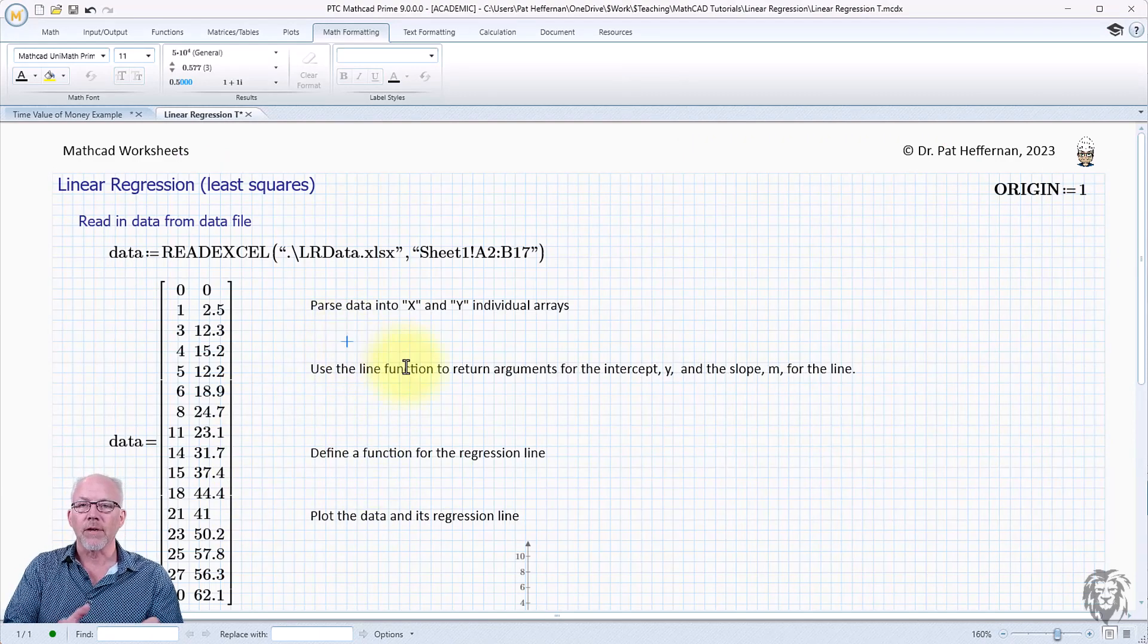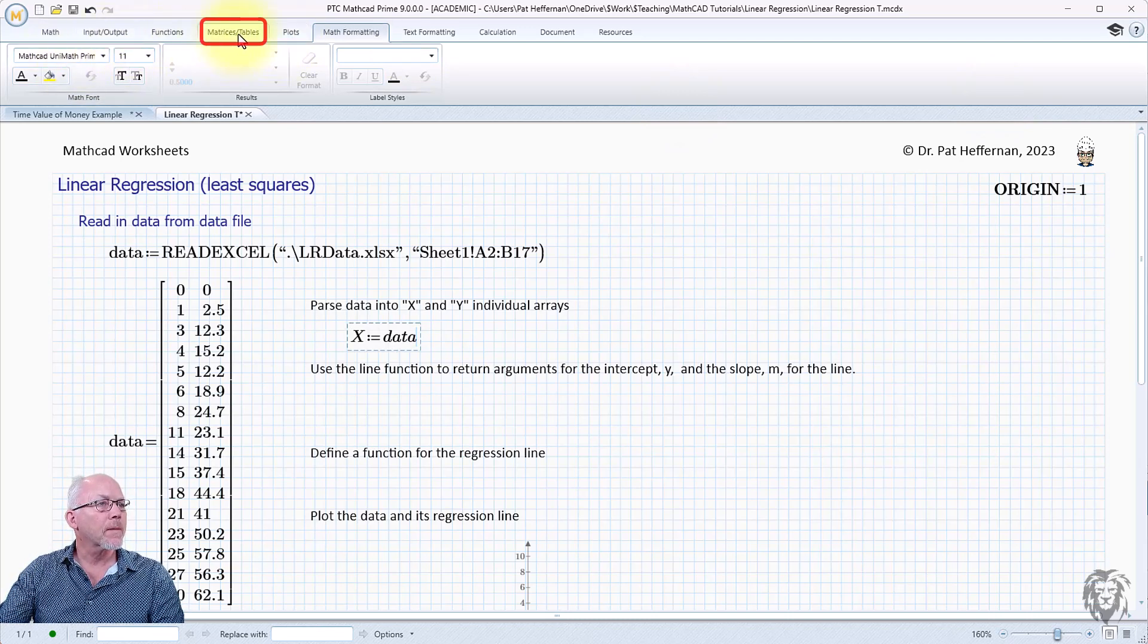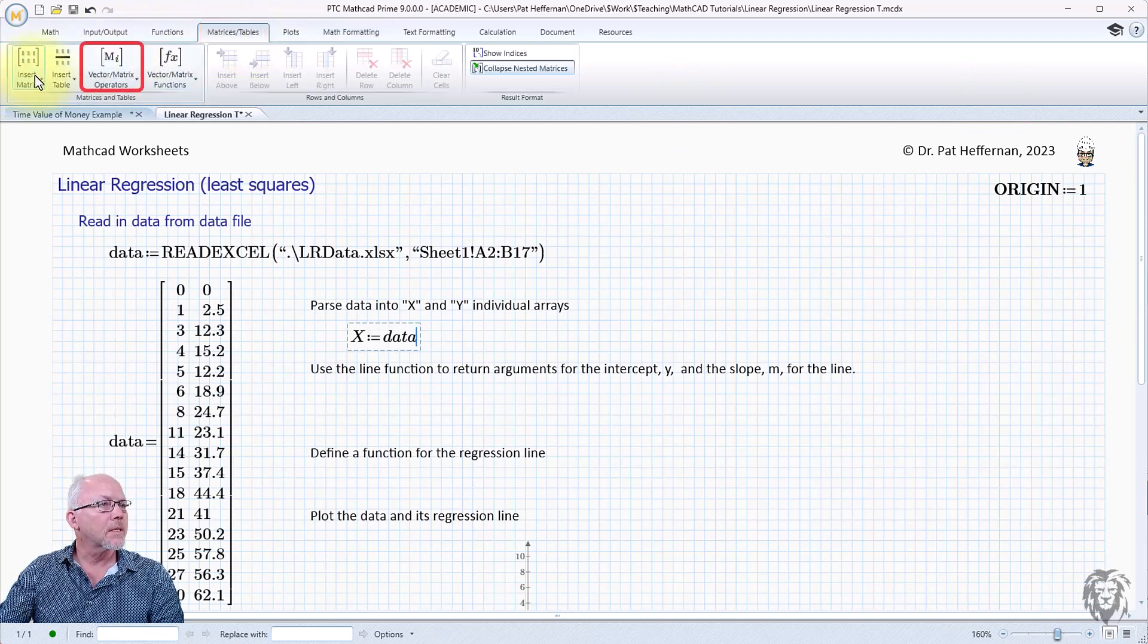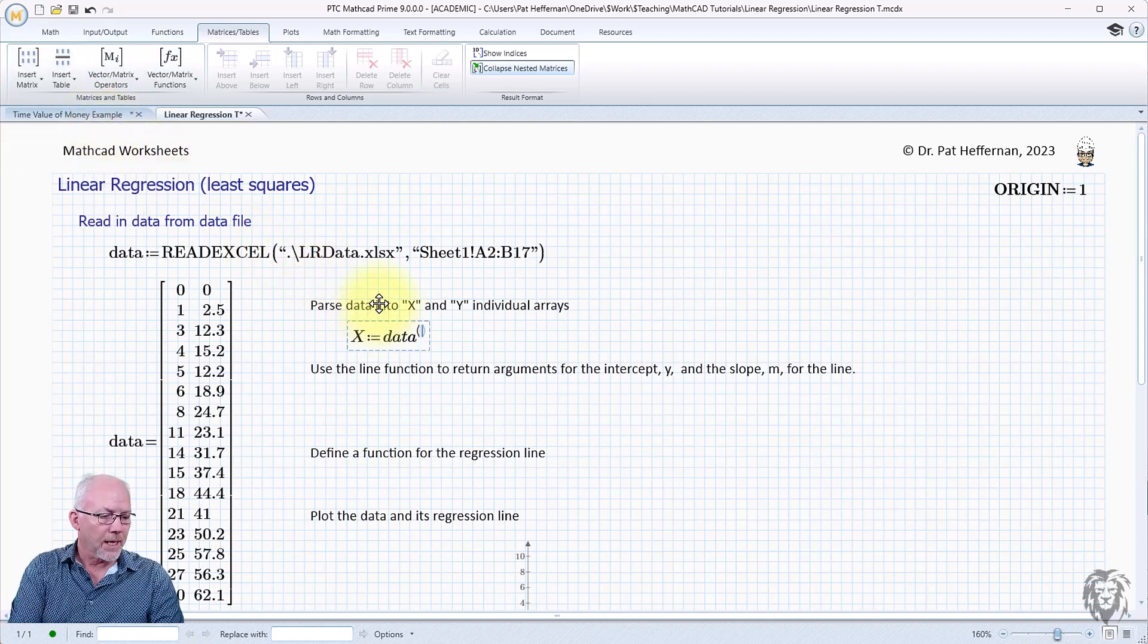The first thing we have to do is come up with two different arrays of our x and y coordinates. I'm going to set that up and say x is equal to, and we're going to draw it from the data array. Go to matrices and tables, and up to our operations, and this is our matrix column, so we're going to choose one of the columns. In this case, I'm going to choose the first column. Note I do have my origin set to one—it's my preferred way of working—and so this becomes the first column, not the zero column, which it would be by default.